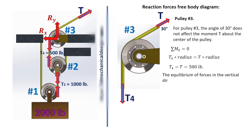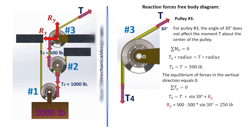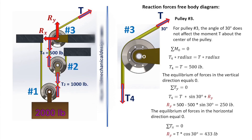The equilibrium of forces in the vertical direction equals 0. Sum of forces Y equals 0: T4 equals T times sine of 30 degrees plus RY. RY equals 500 minus 500 times sine of 30 degrees, equals 250 pounds. The equilibrium of forces in the horizontal direction equals 0. Sum of forces X equals 0: RX equals T times cosine of 30 degrees, equals 433 pounds.